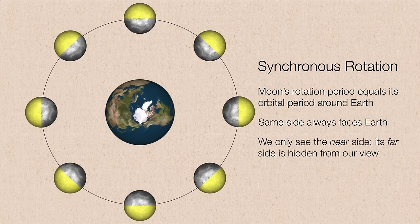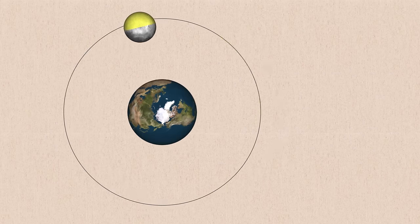Therefore, the far side by definition is forever hidden from our view. As we saw in the previous images, if we wanted to actually view the far side of the moon, you have to go there or at least send a spacecraft there to take a picture and send it back.